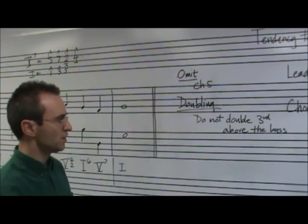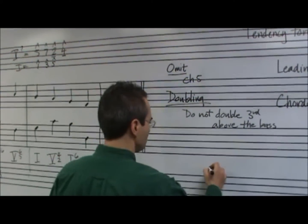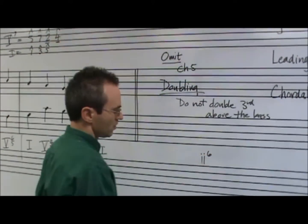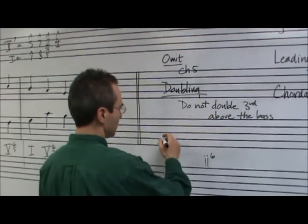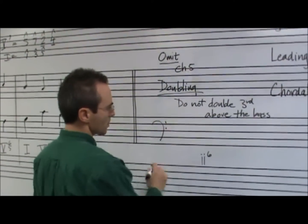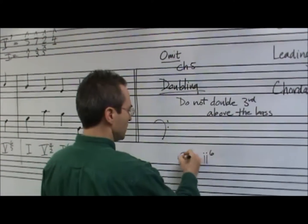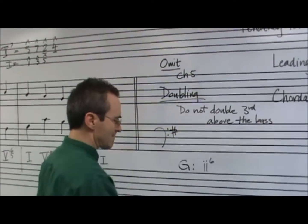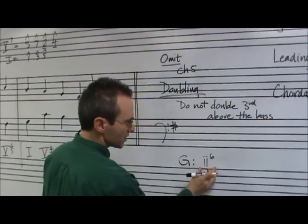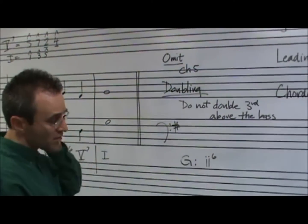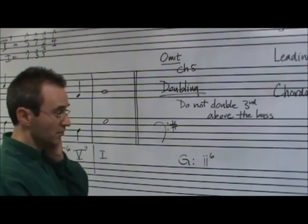For instance, when you have a two-six chord, the bass note gets doubled all the time. So if you're in G, you're dealing with an A chord in this context, a two-six in any key.